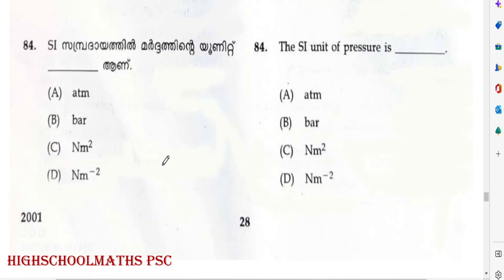Question: The SI unit of Pressure is? Options include Atm, Bar, Newton meter square, Newton per meter square. Answer: Option D — Newton per meter square (Pascal).